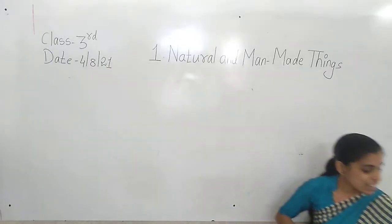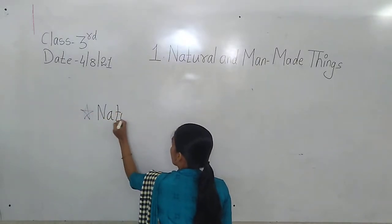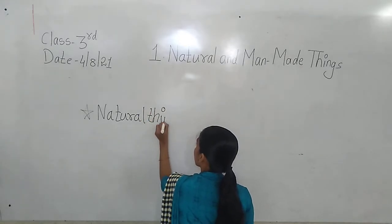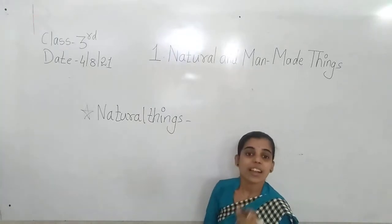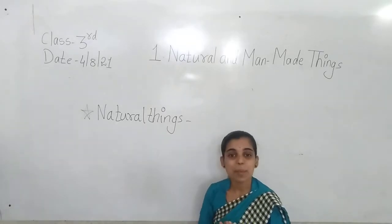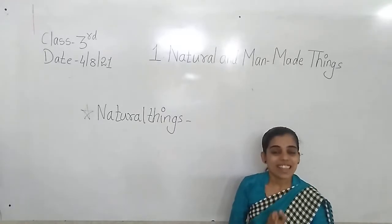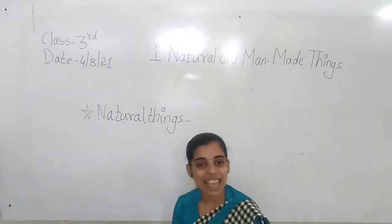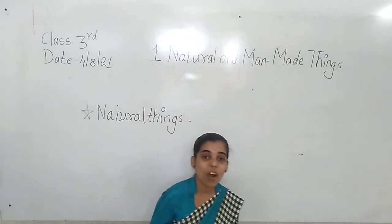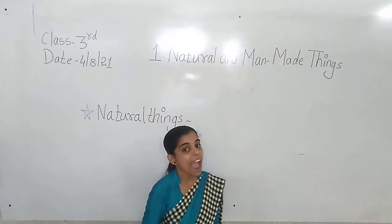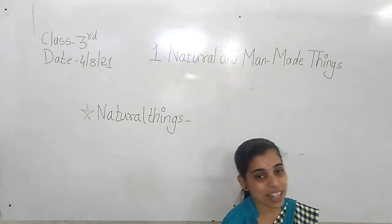Natural things. Natural things means the things which we get freely, which exist already in the surrounding, are called natural things. We get them freely. That is the meaning of natural things.